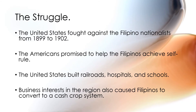The United States fought against Filipino nationalism from 1899 to 1902. The Americans had promised to help the Filipinos achieve self-rule, and they did this by building railroads, hospitals, and schools. But just like in Africa and other parts of Asia, business interests in the region also caused Filipinos to convert to a cash crop system, where they were producing crops for money value instead of other values.